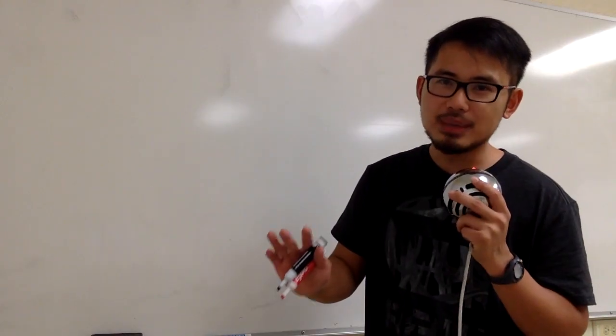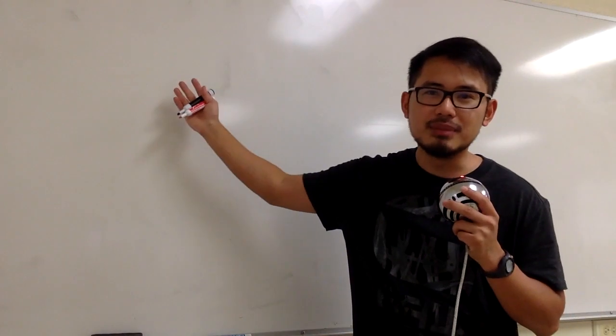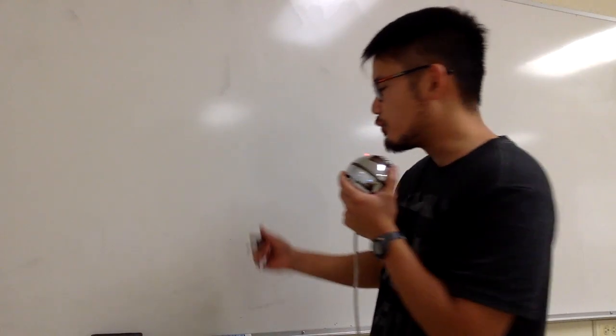Suppose we're trying to integrate a rational expression that has sin x and cos x, and none of the methods we've seen so far work out nicely. In that case, you may want to give this method a try. This is called the Weierstrass substitution, and this is how we're going to start off.